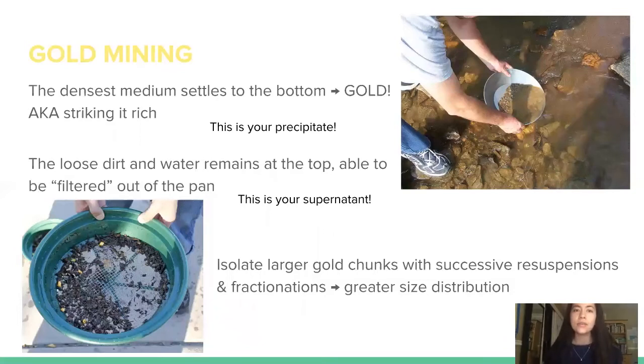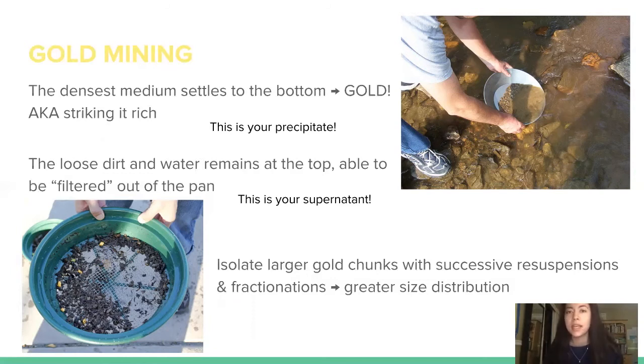As you swish the pan and wait for the heaviest and densest medium to settle to the bottom, that is the equivalent of your precipitate and is the gold you're after. The less dense medium on top is your loose dirt and water, your supernatant, which you drain out into the river.